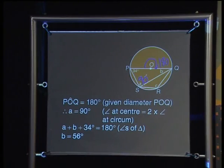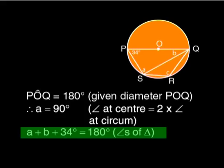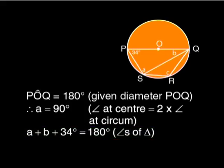If A is 90 degrees, it's easy to find B. The sum of the angles of a triangle is 180 degrees. That means A plus B plus 34 degrees equals 180 degrees. So B is 180 minus 90 minus 34, which gives 56 degrees.